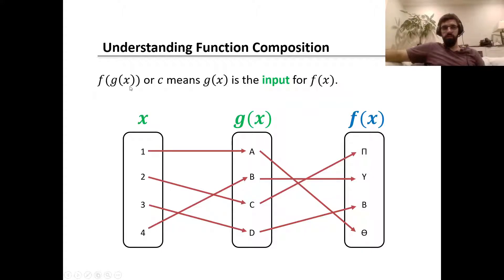What that means is we take an input of x and that's an input for the function g of x. So it maps — for example, one would map to a through g. And then the output for g of x would be the input for f of x. So in this case, a would map to theta.